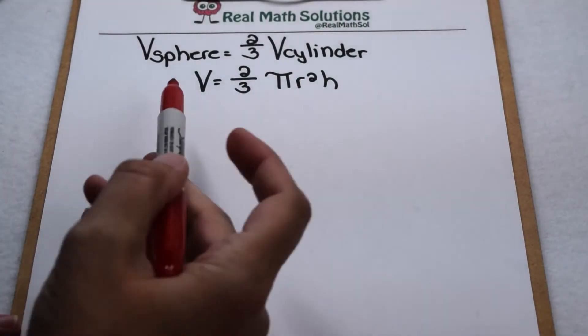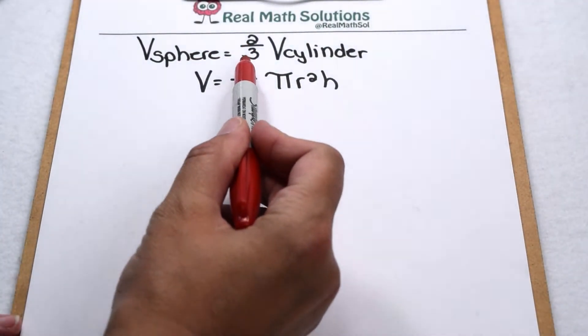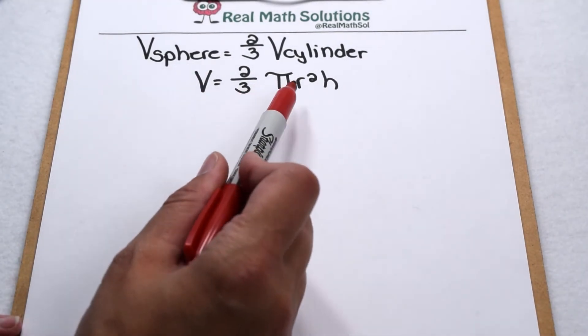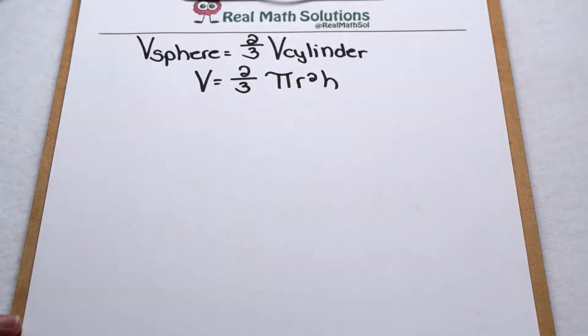From our model, we saw the volume of the sphere is two-thirds the volume of the corresponding cylinder. This means volume of a sphere is two-thirds times pi times radius squared times height.